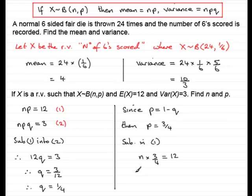So if I multiply both sides by 4, I get 3n equals 48. And if I divide both sides by 3, I have n equals 48 divided by 3, which is 16. So I have the value of n, which is 16, and the value of p now, which is 3 quarters.